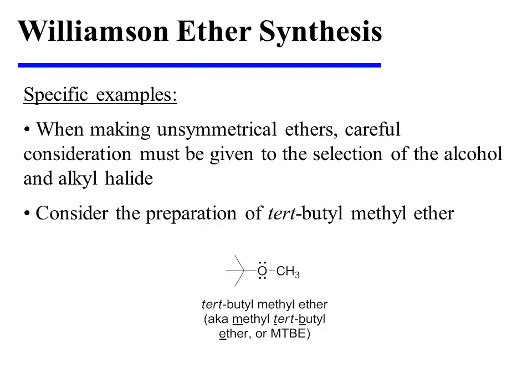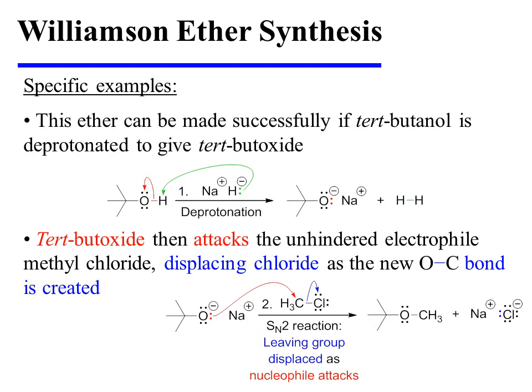In this next example, we will attempt to make an unsymmetrical ether, and this will illustrate the importance of carefully selecting the alcohol and alkyl halide starting materials. Let's consider the preparation of tert-butyl methyl ether, also sometimes known as MTBE or methyl tert-butyl ether. This ether can be successfully prepared if tert-butanol is selected as the alcohol starting material, and it can be deprotonated through the use of sodium hydride to give tert-butoxide.